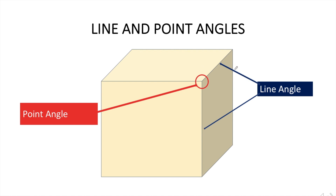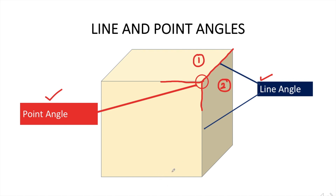Now let's see the line and point angles. A line angle is the junction of two different orientations along a line — for example, the junction between two surfaces. A point angle is the junction of three plane surfaces or three line angles of different orientations. Its name is derived from the involved surfaces or line angles. The junction of three line angles forms the point angle.